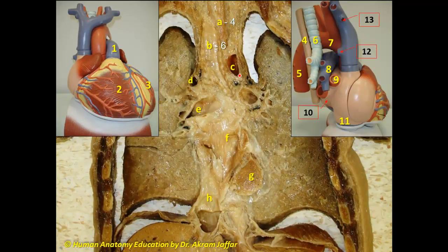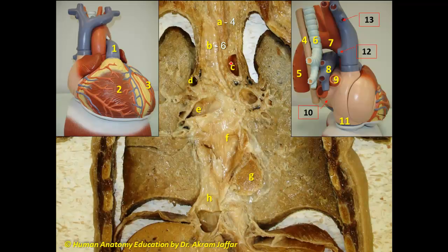C represents a structure that is arching from anterior to posterior, and this is the arch of the aorta. You can see that the arch of the aorta is closely related to the esophagus and to the trachea. The arch of the aorta can push the trachea a little bit to the right and indent itself on the esophagus. An aneurysm of the arch of the aorta might cause compression of the trachea and esophagus. C is the arch of the aorta, and C matches with 7.